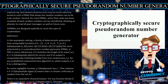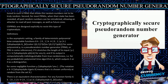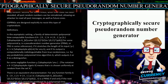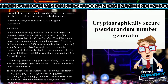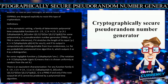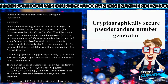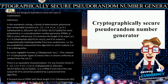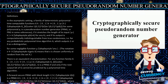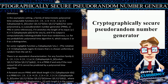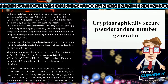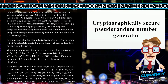The notation X ← X means that X is chosen uniformly at random from the set X. There is an equivalent characterization: for any function family G_K: {0,1}^K → {0,1}^P(K), G is a PRNG if and only if the next output bit of G cannot be predicted by a polynomial-time algorithm.